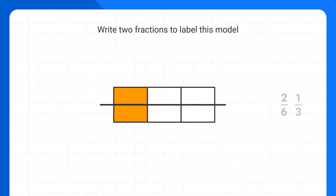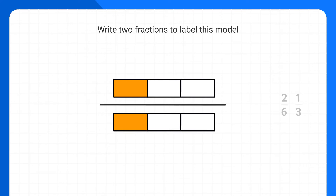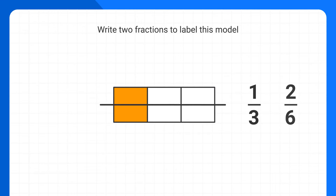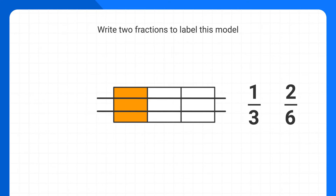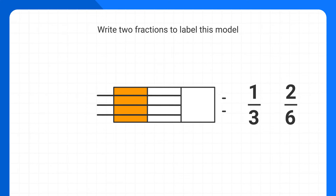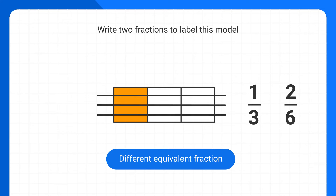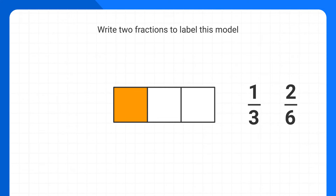So all you need to do to make an equivalent fraction is draw lines to break each piece of the model into smaller pieces. Here we used one-third and two-sixths, but there are other ways you could do this as well. You could have split each piece of the model into three pieces, or maybe even four pieces. Each time, you'd get a different equivalent fraction. But we'll save all that for a later video, and we'll stick with one-third and two-sixths for now.